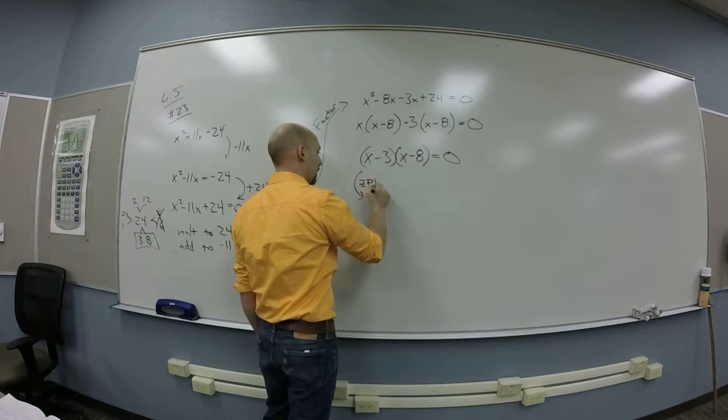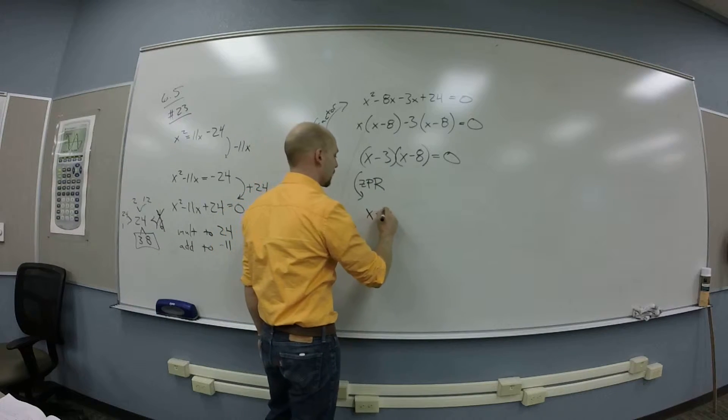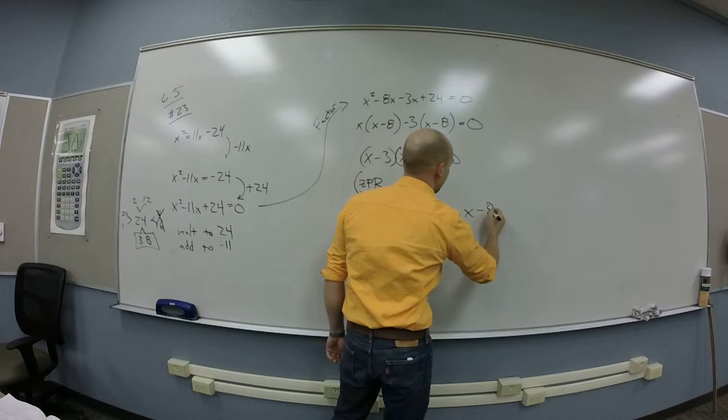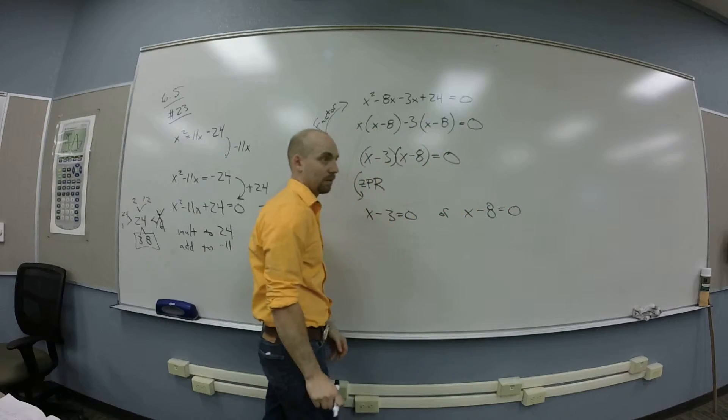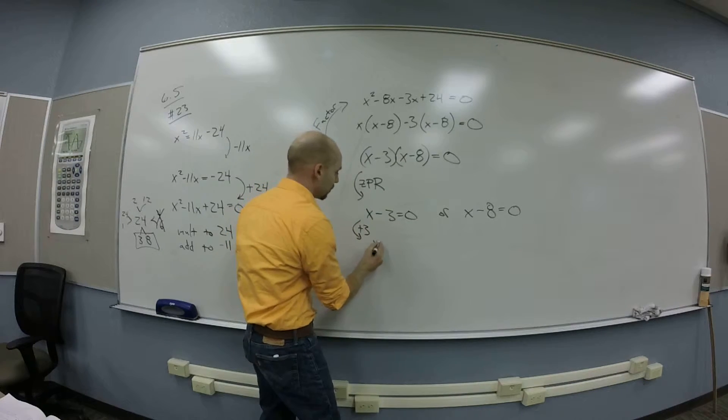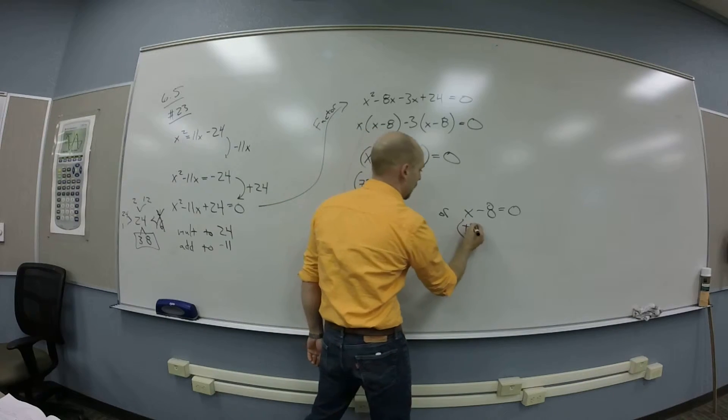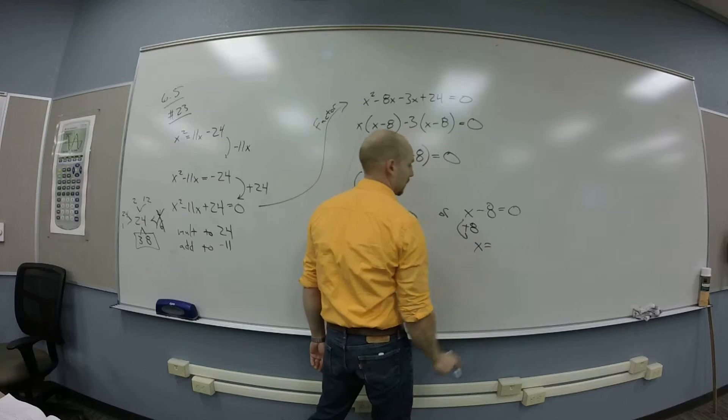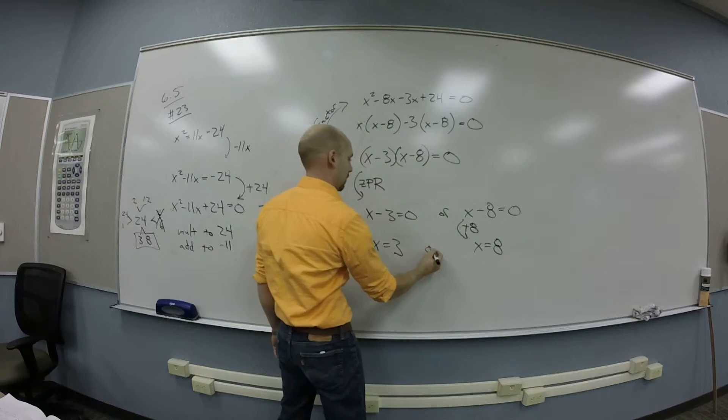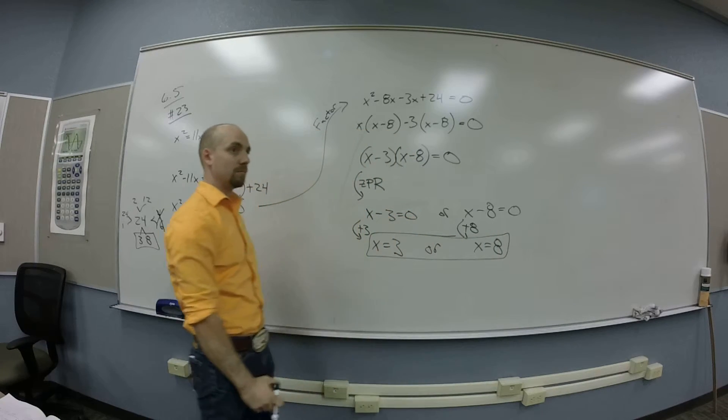Okay, so I'm applying the zero product rule. So I've got x minus 3 is zero or x minus 8 is zero. Okay, so I add 3 to both sides, so I get x is 3. I add 8, so I get x is 8. Am I done?